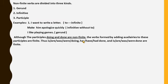Now let's talk about the division of non-finite verbs. So non-finite verbs are divided into three kinds. Number one: gerund. Number two: infinitive. Number three: participle. So here are examples. Example number one: I want to write a letter. So here, to is infinitive. The second sentence: Make him apologize quickly. So there is infinitive without to. The third sentence: I like playing games. So here, playing is gerund. So there is a note you have to understand. Although the participles doing and done are non-finite, but the verbs formed by adding auxiliaries to these participles are finite.